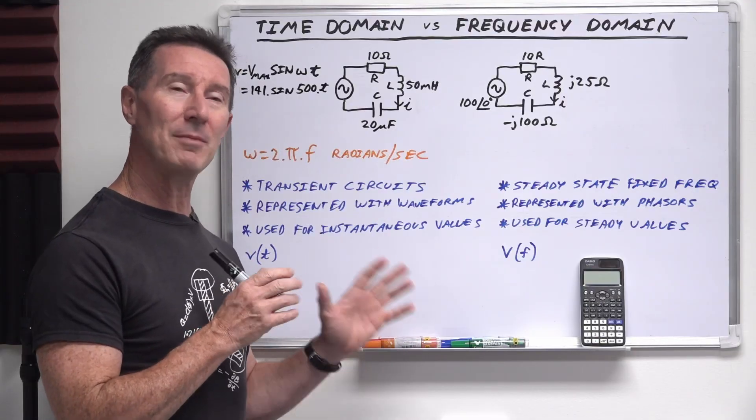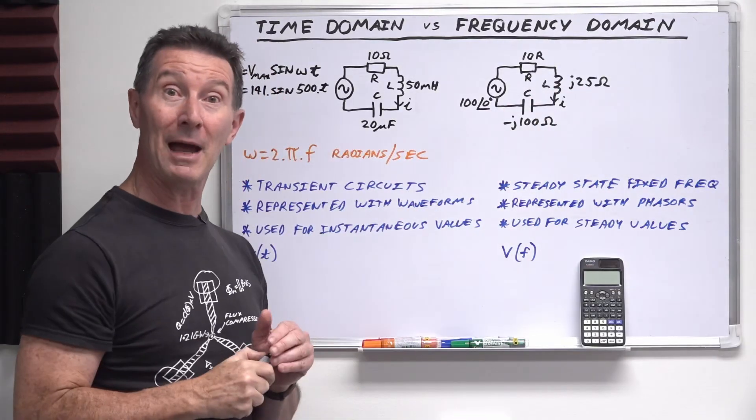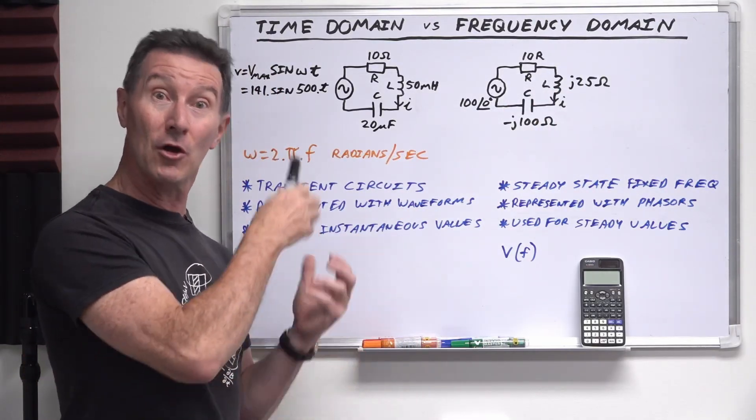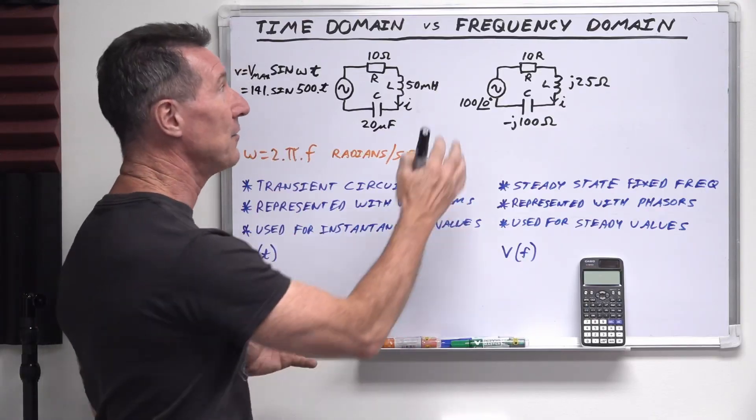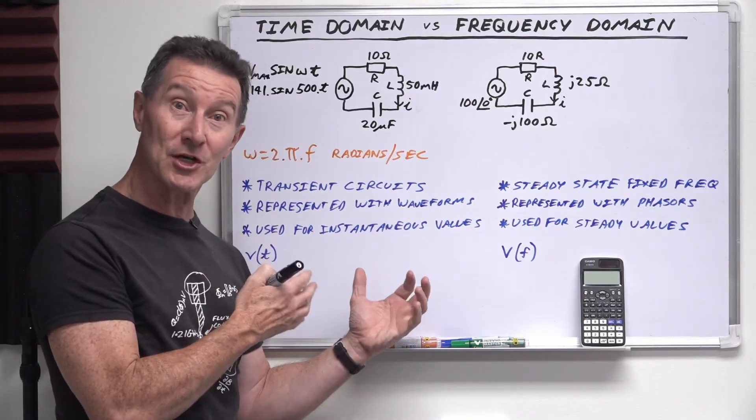What we're going to look at briefly this time is what's called time domain versus frequency domain. And you might be used to this. Time domain is your basic oscilloscope with your waveforms and whatnot. And your frequency domain is frequency domain analysis. Because your oscilloscope, for example, is a time domain instrument.